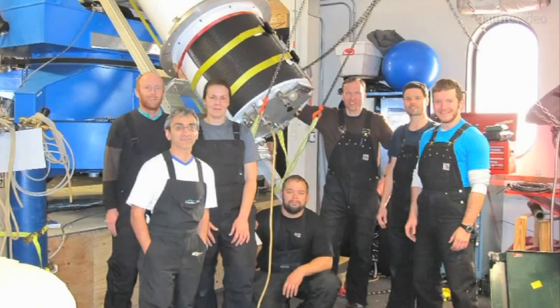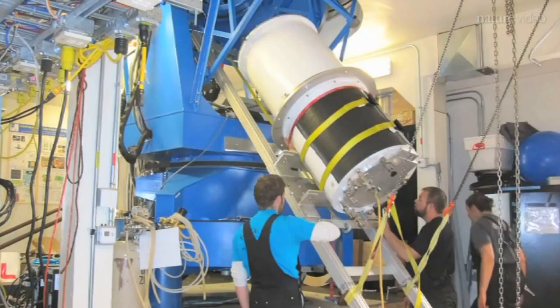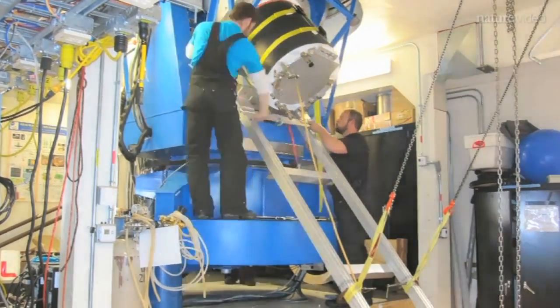To find out, a team led by the Center for Astrophysics in Massachusetts built super-sensitive radiation detectors. They took them to the South Pole, installed them in a telescope, and started looking for ripples in the sand.